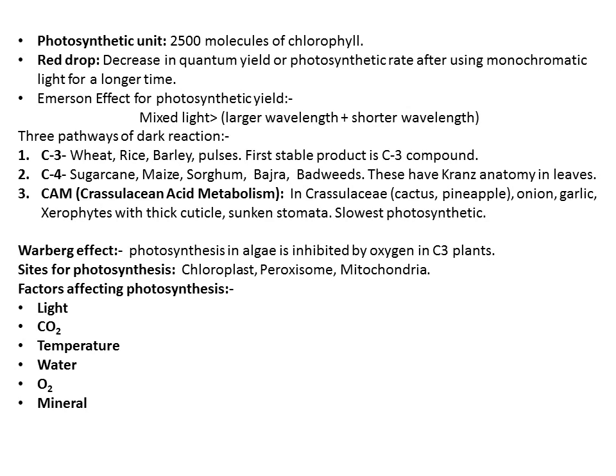The third pathway is Crassulacean Acid Metabolism (CAM). CAM plants are the slowest photosynthetic plants. They behave as C4 at night and C3 during the day, and fix CO2 lost in respiration. Generally they are xerophytes with thick cuticle and sunken stomata to reduce water loss, as they are found in arid regions. They belong to the family Crassulaceae, which includes cactus, pineapple, onion, garlic, and other xerophytes.